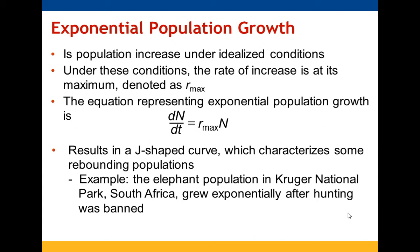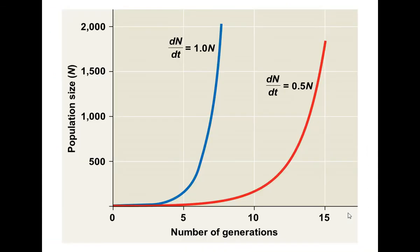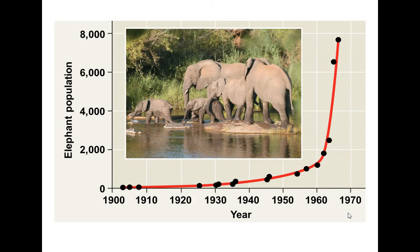Exponential growth results in a J-shaped curve. We do see this in some populations that are rebounding because changes in their surroundings allow growth without restrictions. The elephants that were no longer being hunted are one example — their population increased dramatically, showing that J-shaped exponential growth curve.